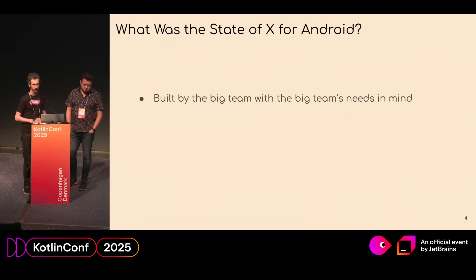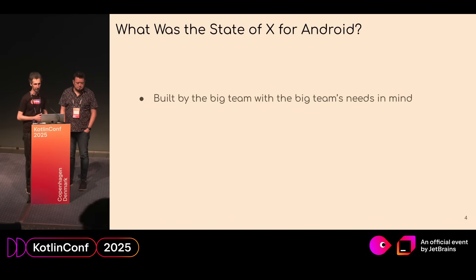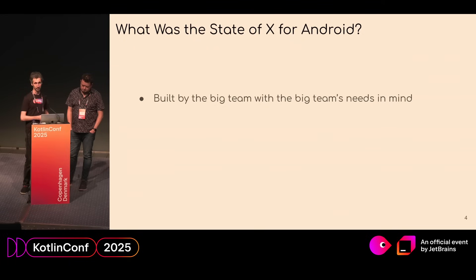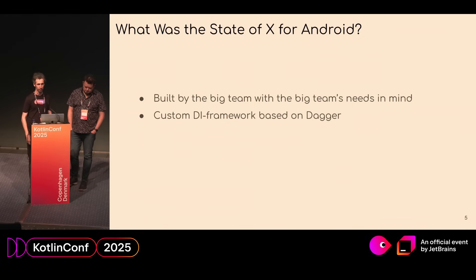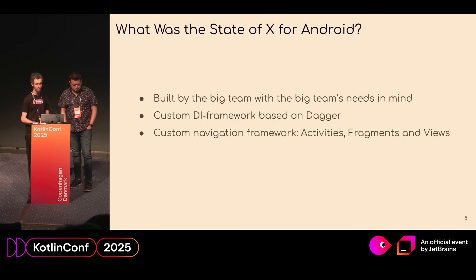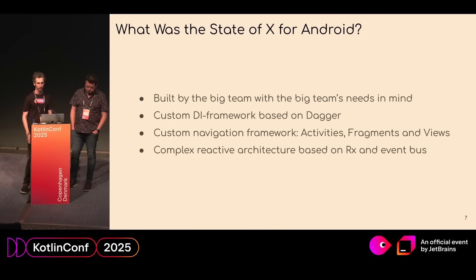Before that, I would like to share some details about the state of the main app, X for Android, which has been available to download for quite some time. It was built by a big team with big team needs in mind, which means the architecture and infrastructure are quite defensive to protect developers from simple mistakes. We have a custom DI framework based on Dagger — essentially a fork — a custom navigation framework based on activities, fragments, and classic Android views, and a reactive architecture based on RxJava and EventBus.